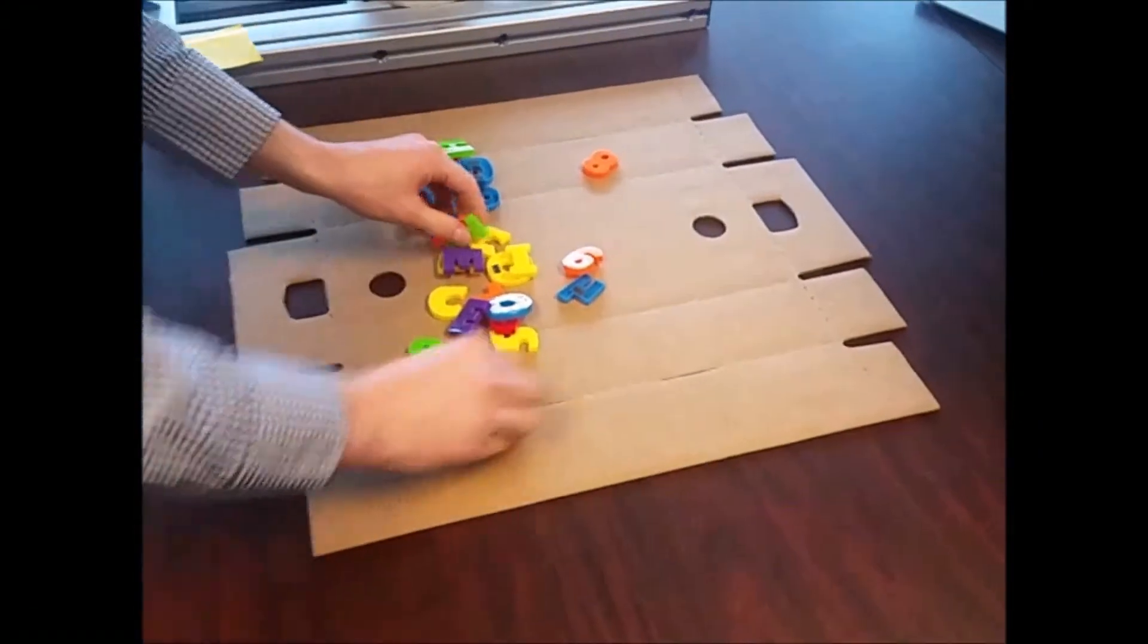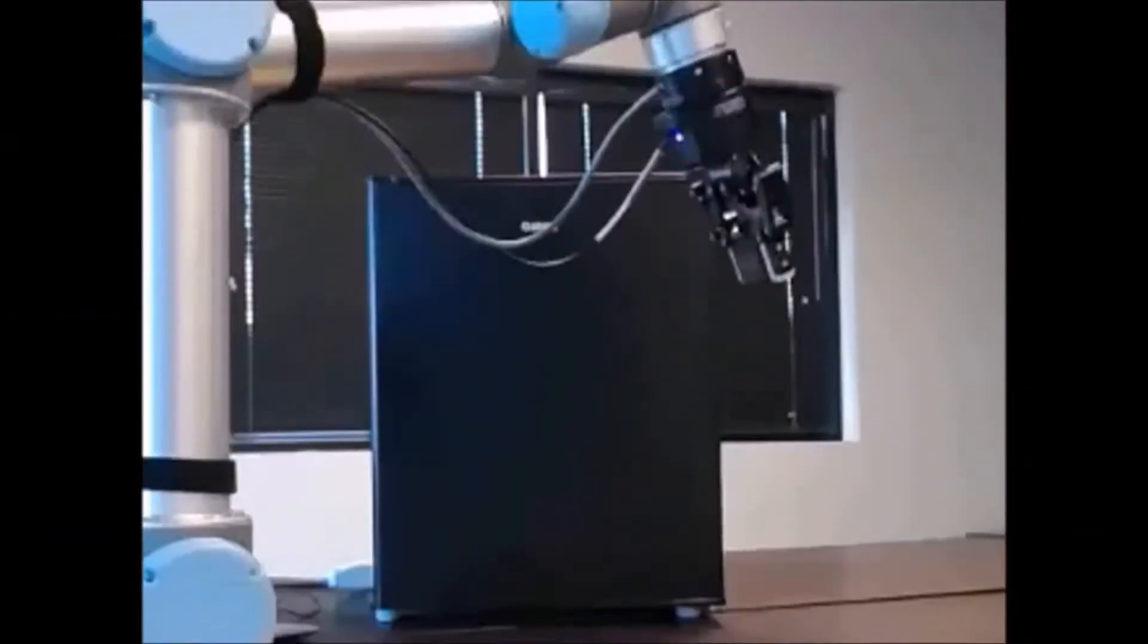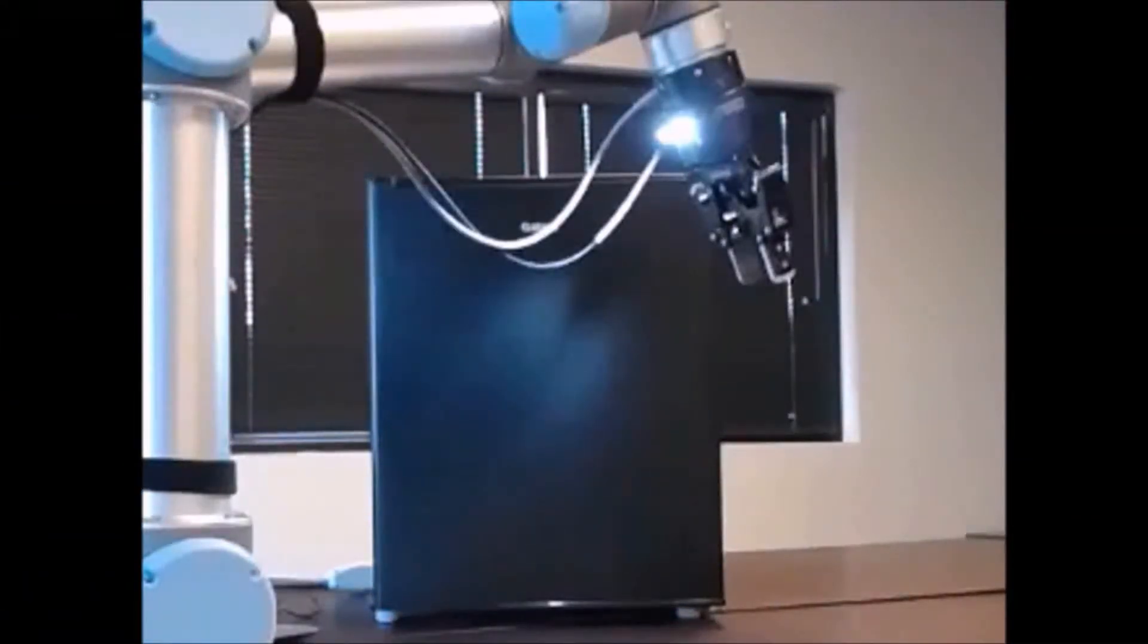The system has been set up to repeatedly identify and pick up fridge magnets in any given position and orientation, and place them on a fridge to spell a message.